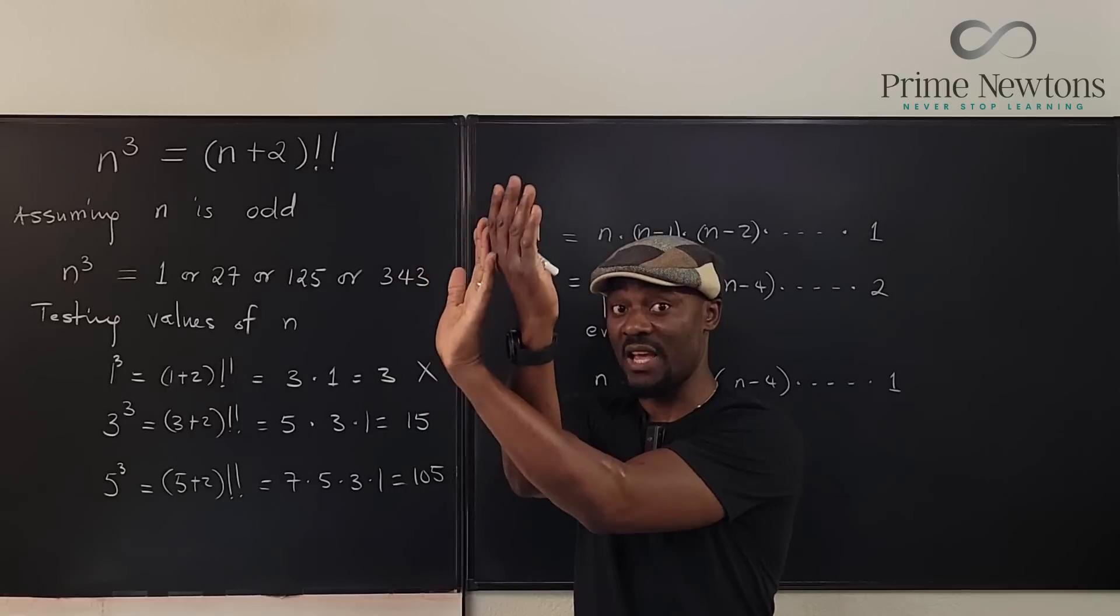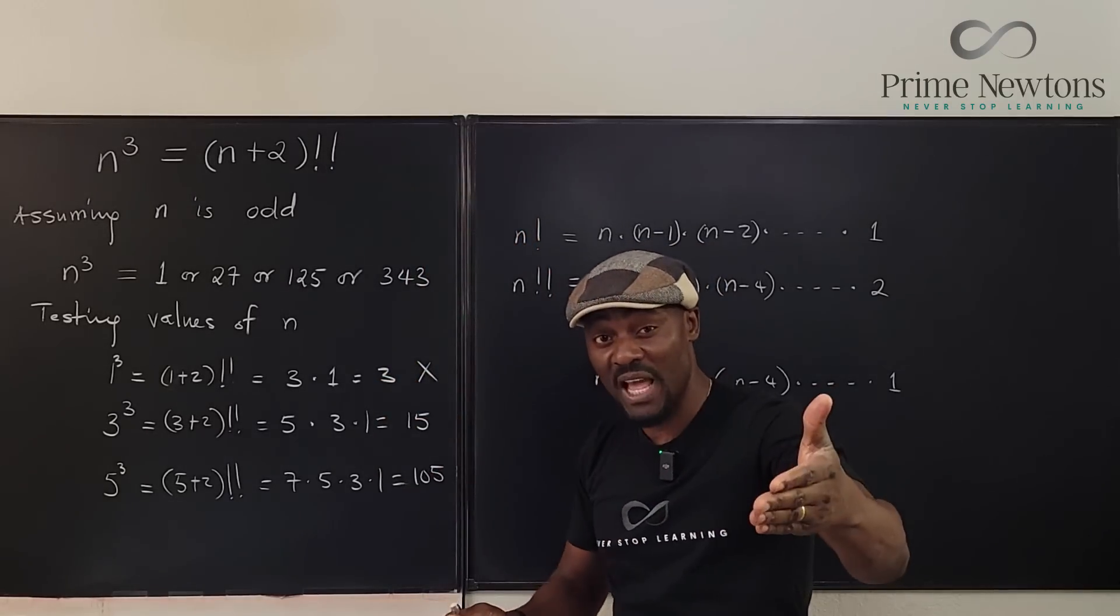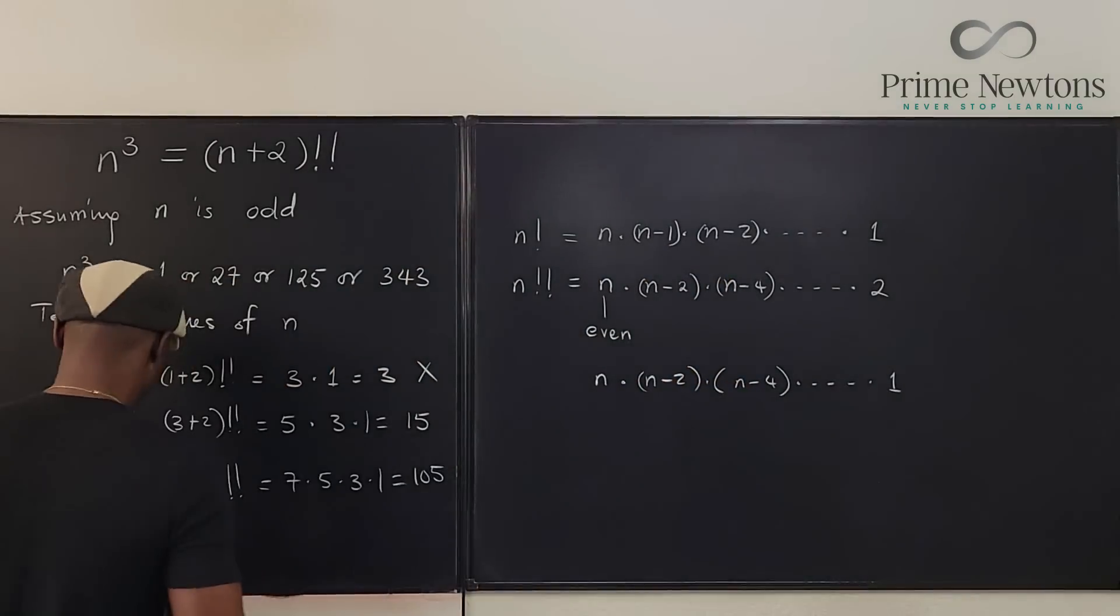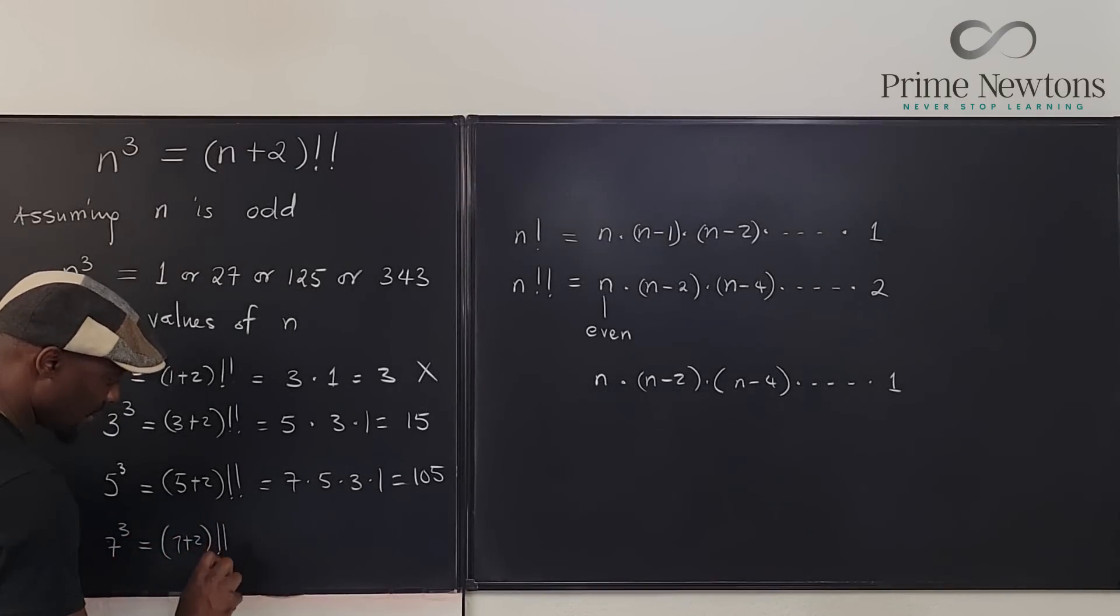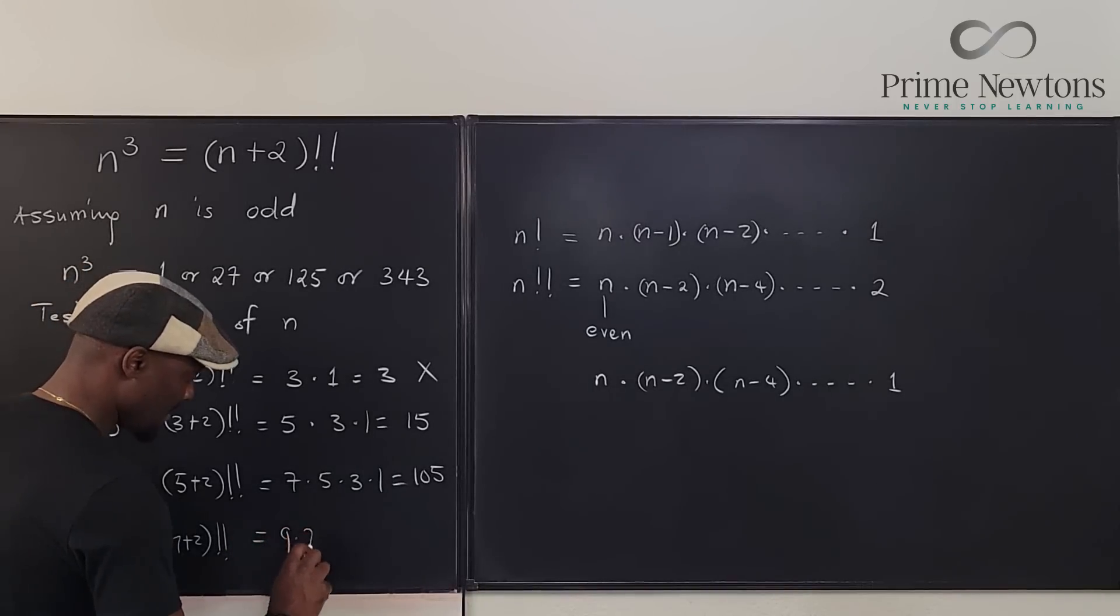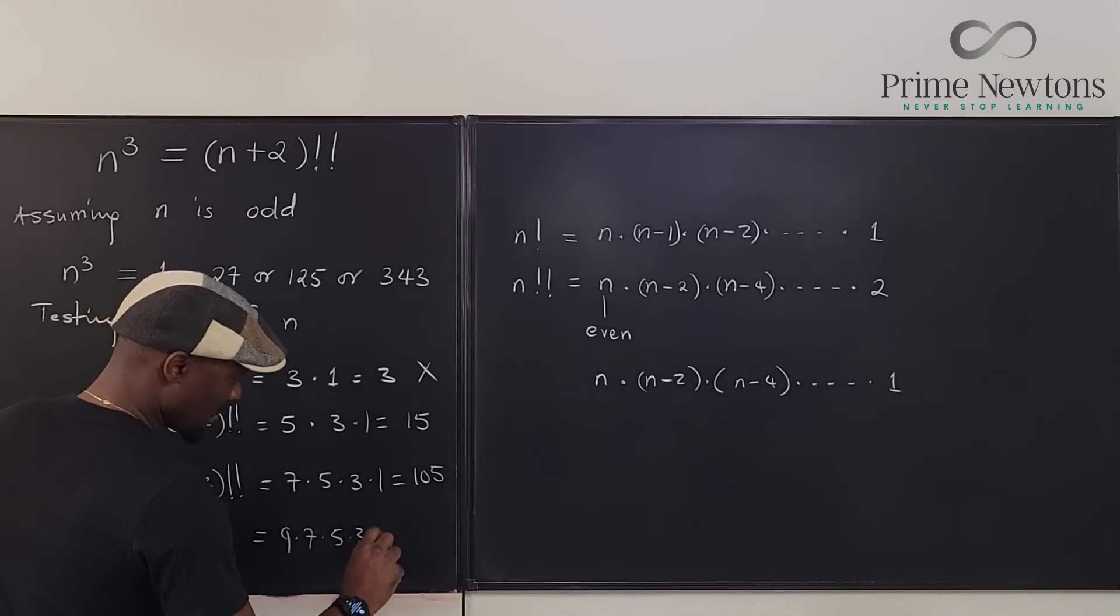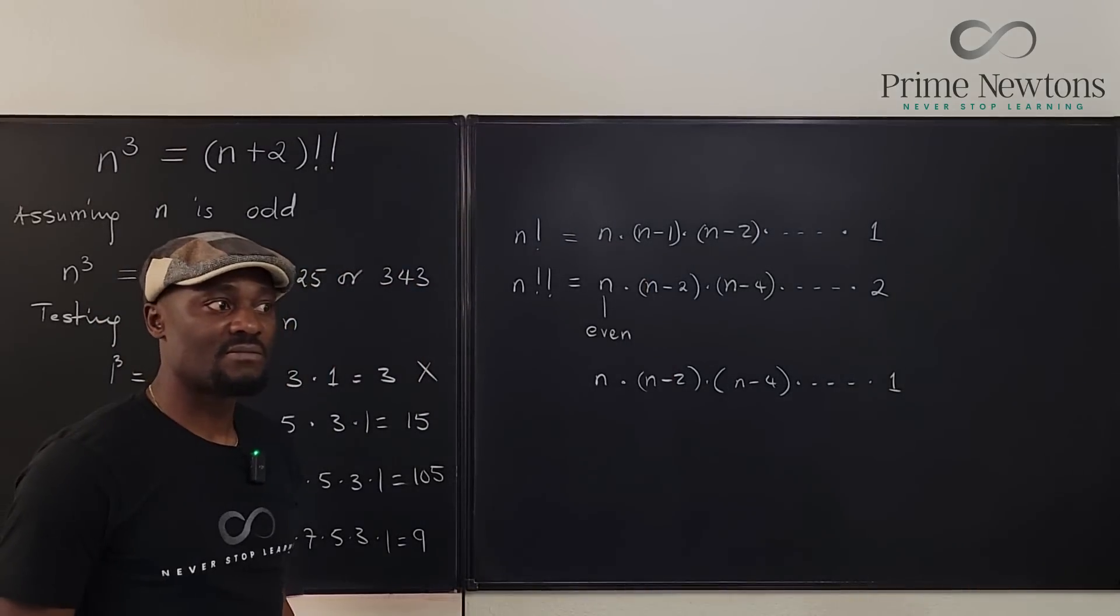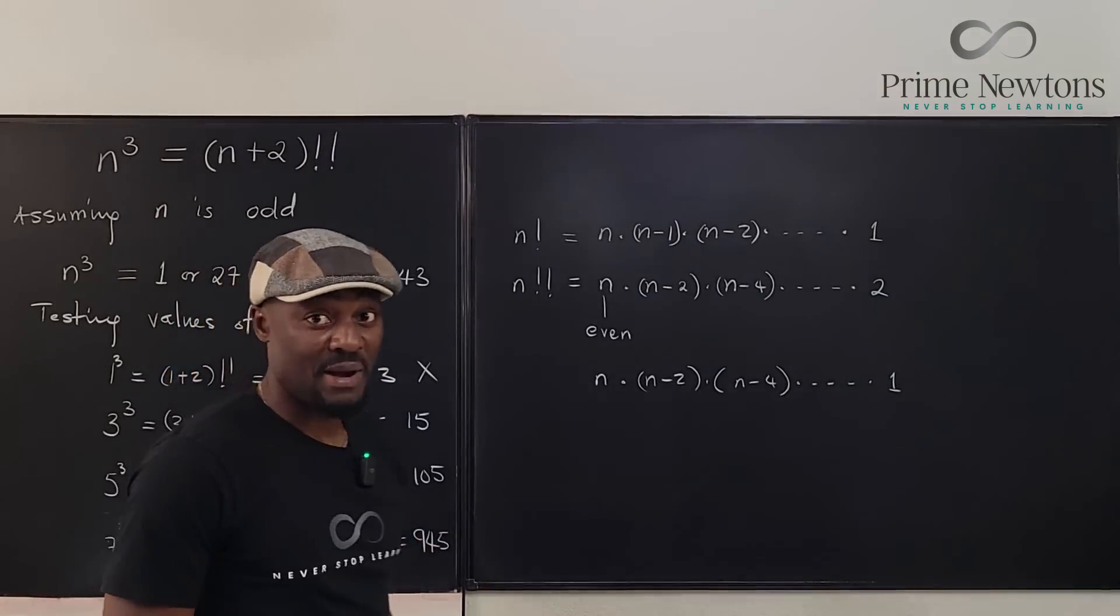Is there a chance they might cross again? So that point where they crossed is a possible answer, but let's see. Let's try one more. So we're going to have 7 cubed will be equal to 7 plus 2 double factorial will be equal to 9 times 7 times 5 times 3 times 1. And what will this be? This is going to be, what is half of 9? 4.5.